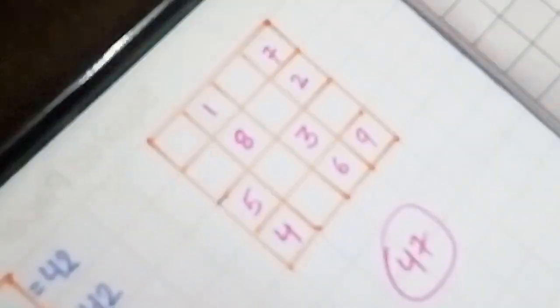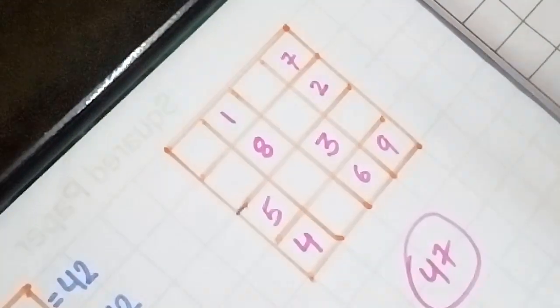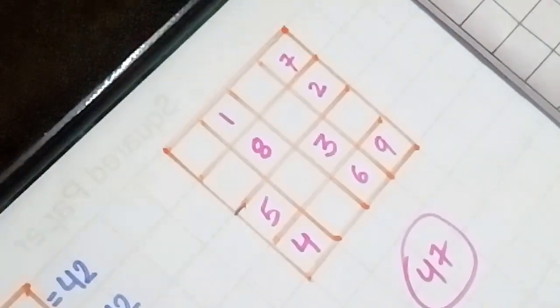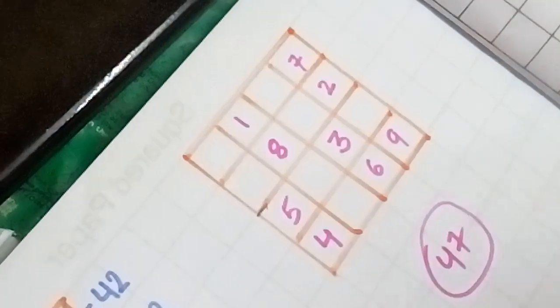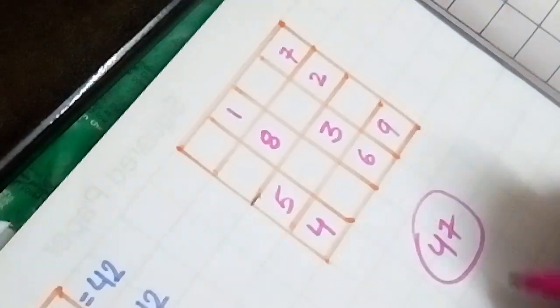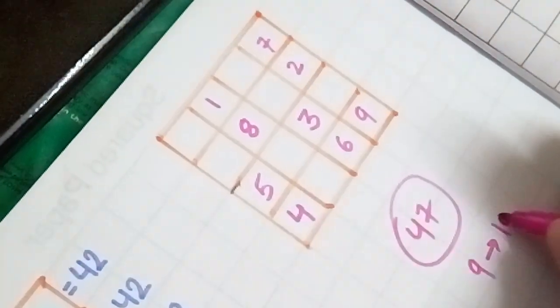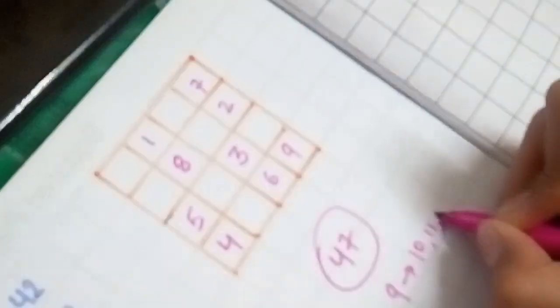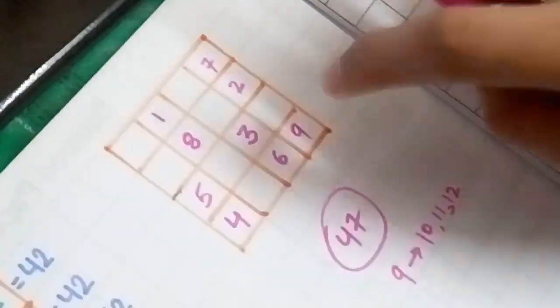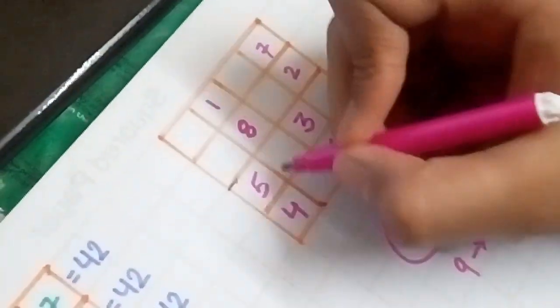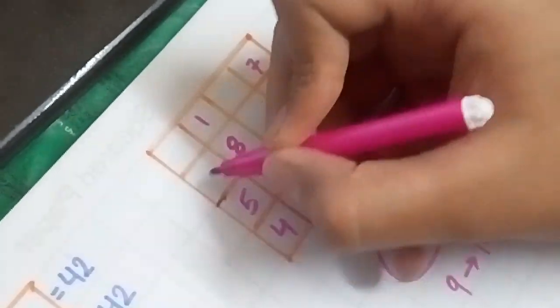So you have completed 9 blocks. Now you have to write successors of 9. Successors of 9 are 10, 11, and 12. Now you are going to write these numbers in this box. So you write 10 here, 11 here, and 12 here.